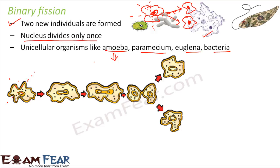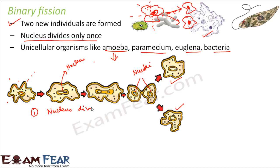In amoeba, what actually happens is the nucleus first expands and then breaks into two halves, forming two nuclei. As soon as the nucleus splits into two nuclei, the two cells gradually get separated, forming two daughter cells. In this case the parent stops to exist — it breaks to form two daughter cells that are exactly identical to the parent.